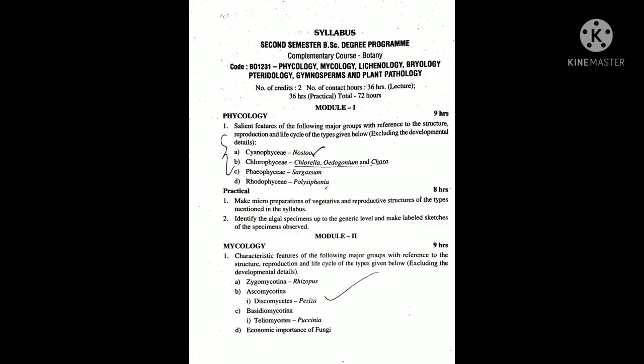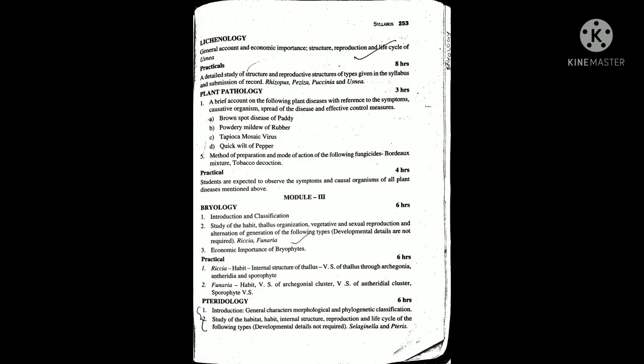We are learning Mycology. Rhizopus, Peziza, Puccinia. We are learning all economic importance. In Phycology there is economic importance and also in Mycology. We are learning Lichenology — Lichen and salient features. We are learning Lichen reproduction structures, general structures, thallus organization, and life cycles. We are learning Lichen reproduction structures and salient features.